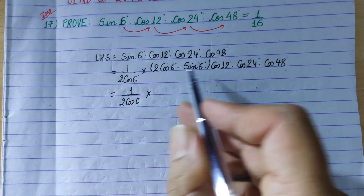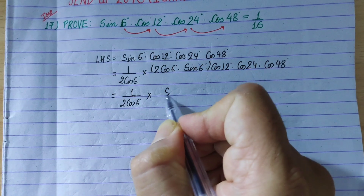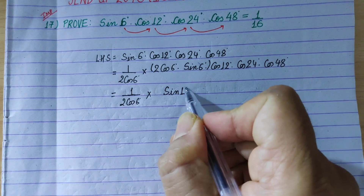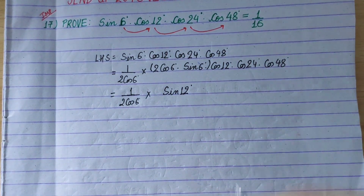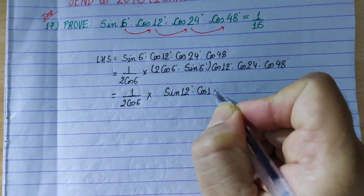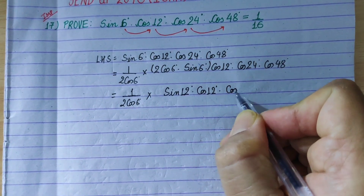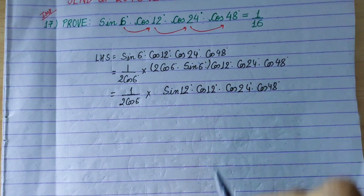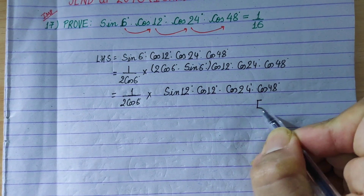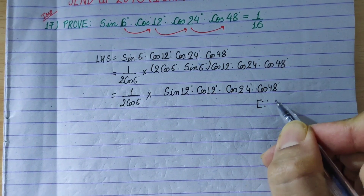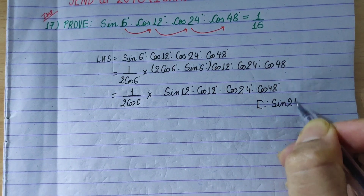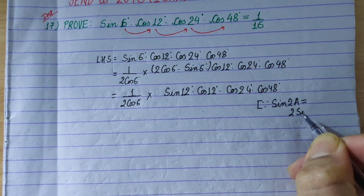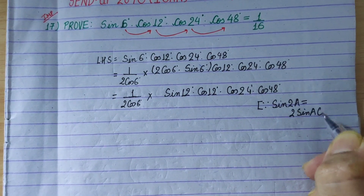So we now have sin 12° times cos 12° times cos 24° times cos 48°. The formula is sin 2A equals 2 sin A cos A. Applying it again, 2 sin 12° cos 12° gives sin 24°.